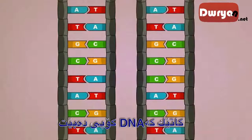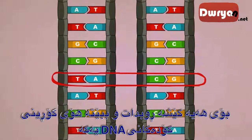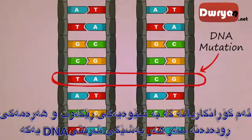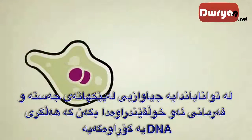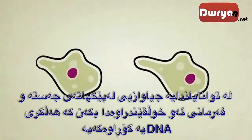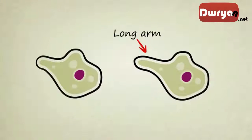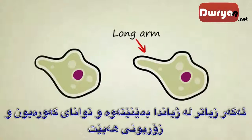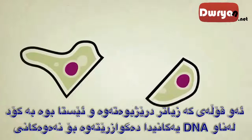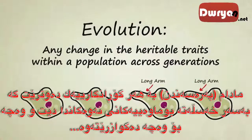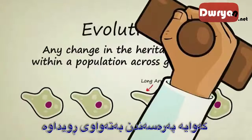When DNA is being copied, errors can occur which modify the DNA code — this is what we call a DNA mutation. These mutations, which happen completely on accident and randomly to any part of a DNA strand, can produce variation in the body shape and function of the creature who inherits the modified DNA. In this case, our new little friend has an arm that stretches extra long. If he survives long enough to grow and reproduce, that extra stretchy arm — which is now coded for in his DNA — will be passed on to his children. Evolution: any change in the heritable traits within a population across generations has officially occurred.